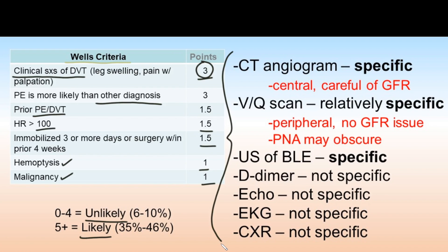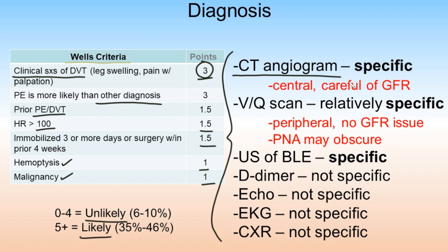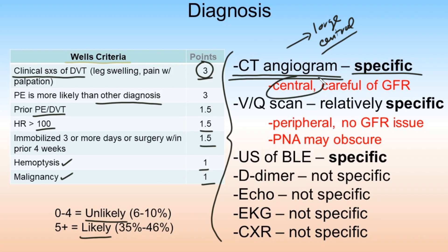The CT pulmonary angiogram (CTPA) has the patient hold their breath for about 10 seconds while the scanner rapidly images the pulmonary arteries. It's a great test for large, central PE, but not as good for chronic or peripheral PE, since the radiologist must visually identify the clot. It's fairly specific for central disease. You must check the GFR because contrast is required — poor kidney function precludes this test.